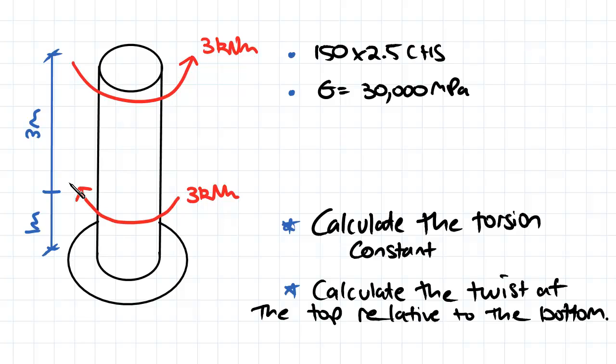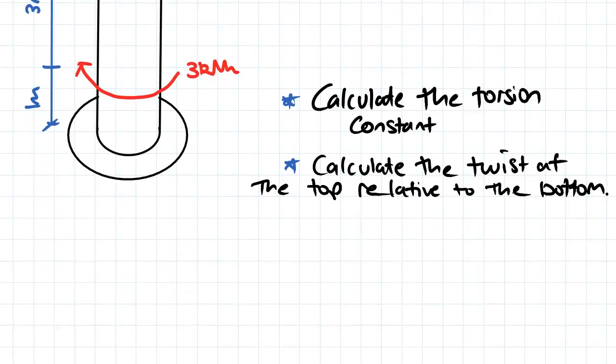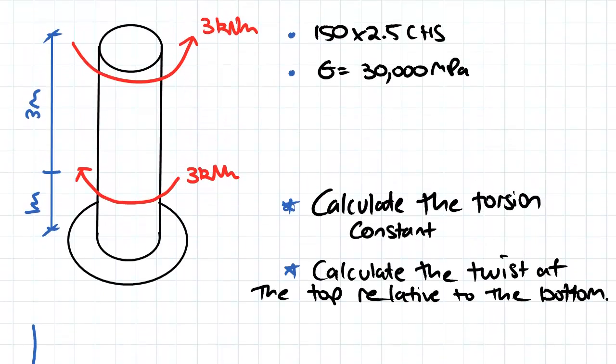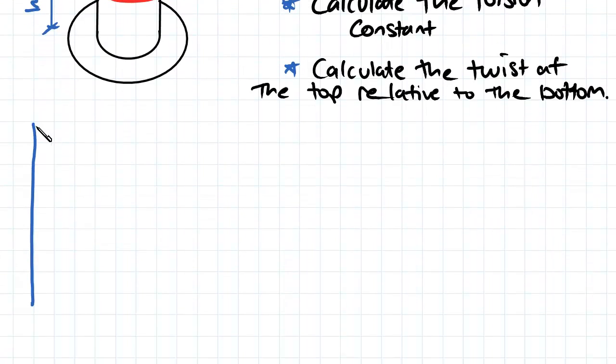Again with any torsion problem you should first draw up a twisting moment diagram. We'll start at the top of the shaft and work our way down to the bottom. So at the top of our shaft we've got three kilonewton meters acting, that's in the anti-clockwise direction so that'll be positive.